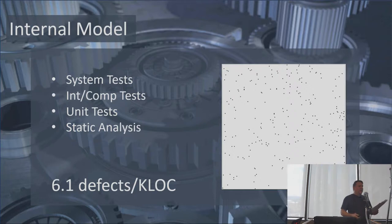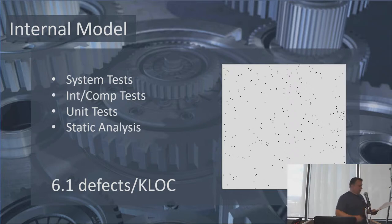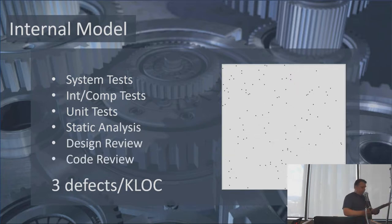Let's look at a project that does a mediocre job of system tests, integration tests or component tests, unit tests, and static analysis — with beta testing gone. Because of these activities, right off the bat the defect density is better: it's down to 6.1. If that project also does design reviews and code reviews, they can cut this rate in half to 3.